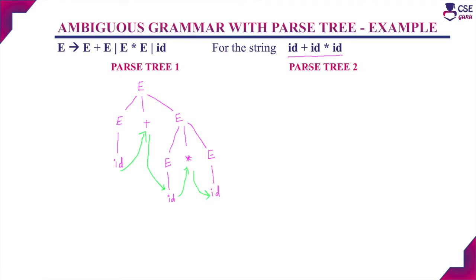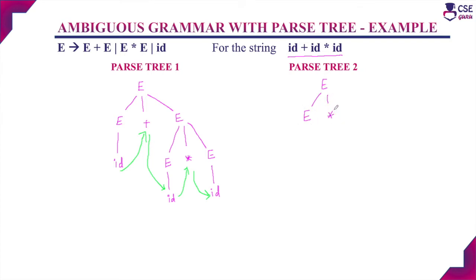This is the first parse tree. For the second parse tree, E is the start symbol and here we apply the production E → E * E. For the first non-terminal E, we again apply the production E → E + E.